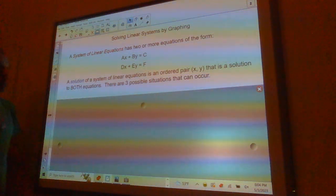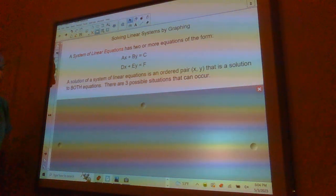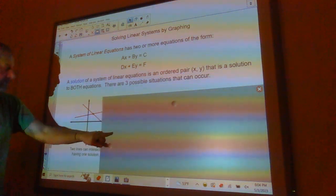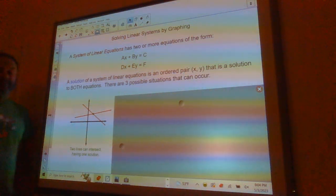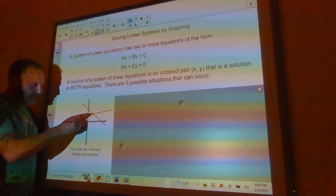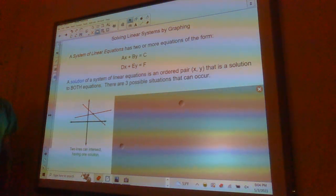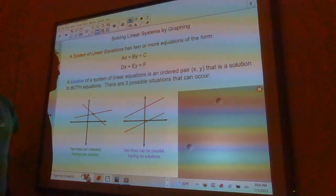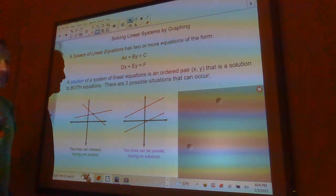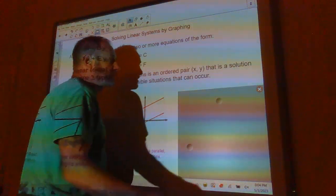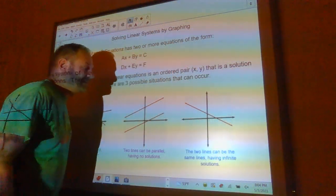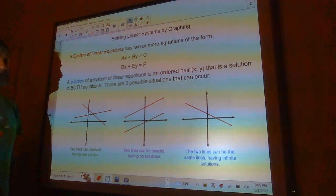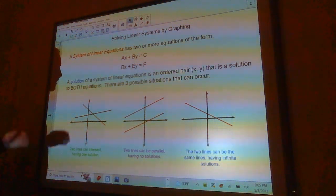When you have a system of linear equations, there are three possible things that can happen. The first one is that the lines can intersect at a point, which means there is one solution to the problem. The next thing that can happen is the two lines can be parallel and therefore have no solutions because those lines never intersect each other. The third situation is that both lines are actually the same line, and so it has an infinite number of solutions. Anything that works for one also works for the other one.